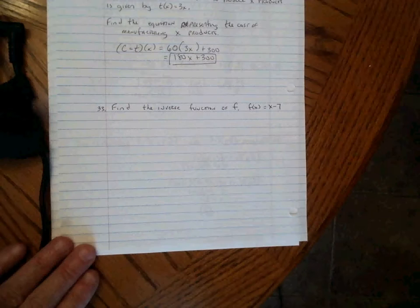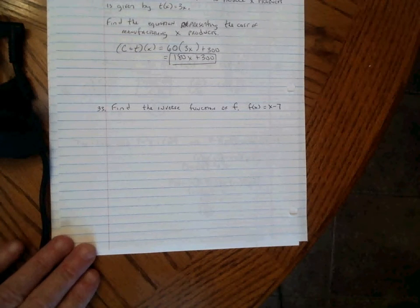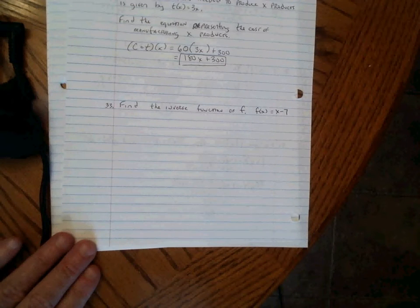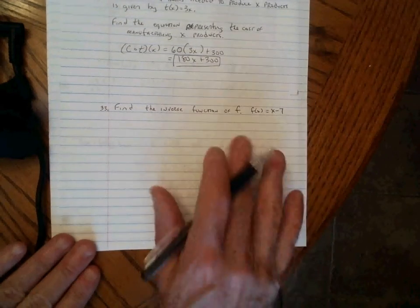We're asked to find the inverse function of F, where F of X equals X minus 7. This is something we haven't yet taught you. We were planning on teaching you later in the course, but here we find ourselves with very limited days, so we have to teach it to you now.